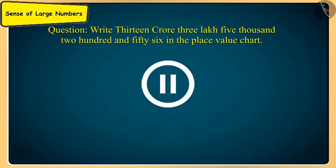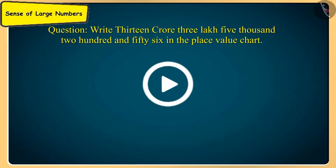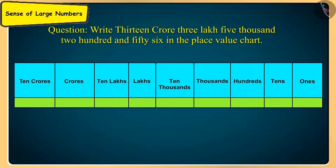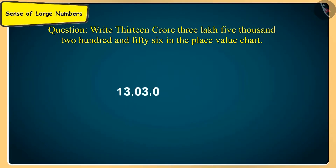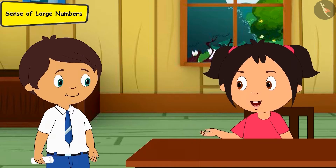Oh yes, now I understood. According to the Indian system of numeration and the place value chart, we have to write the number like this. Now I will try to write the number in the correct box — 13 crores, 3 lakhs, 5 thousand, 2 hundred and fifty-six. Yes, see how easy it is!